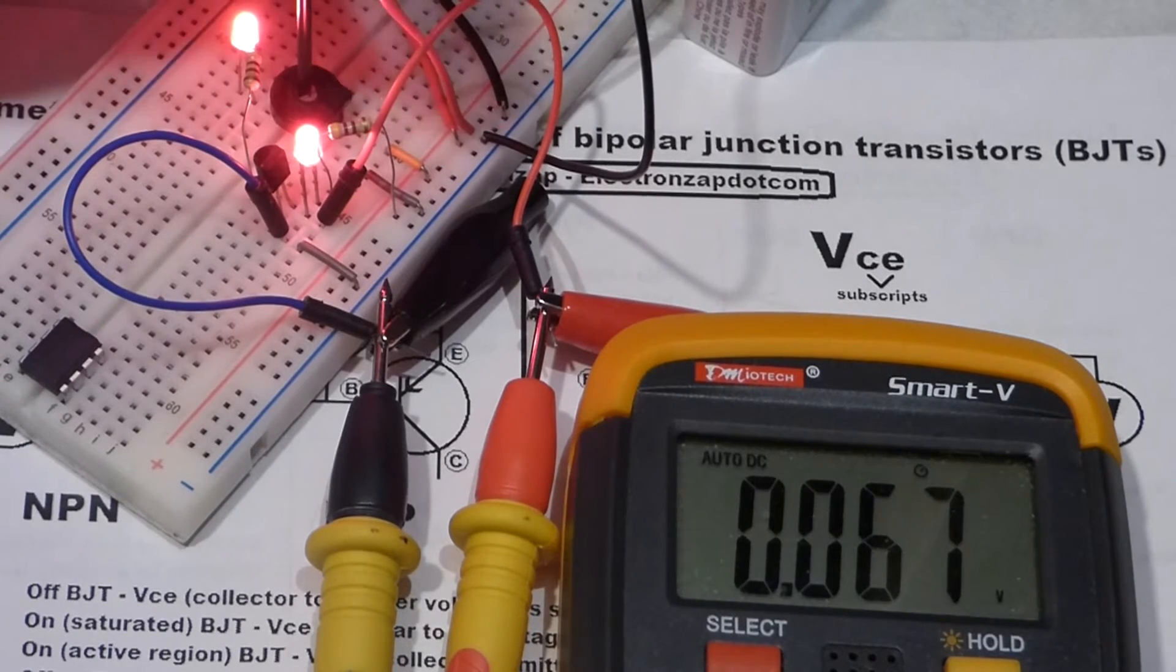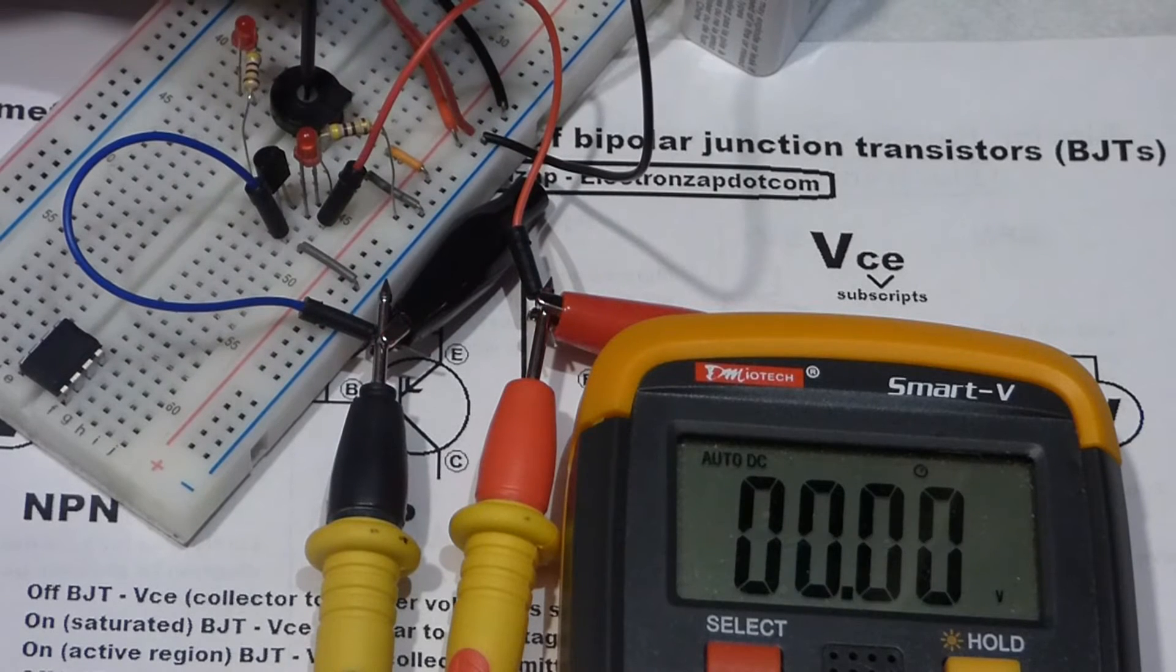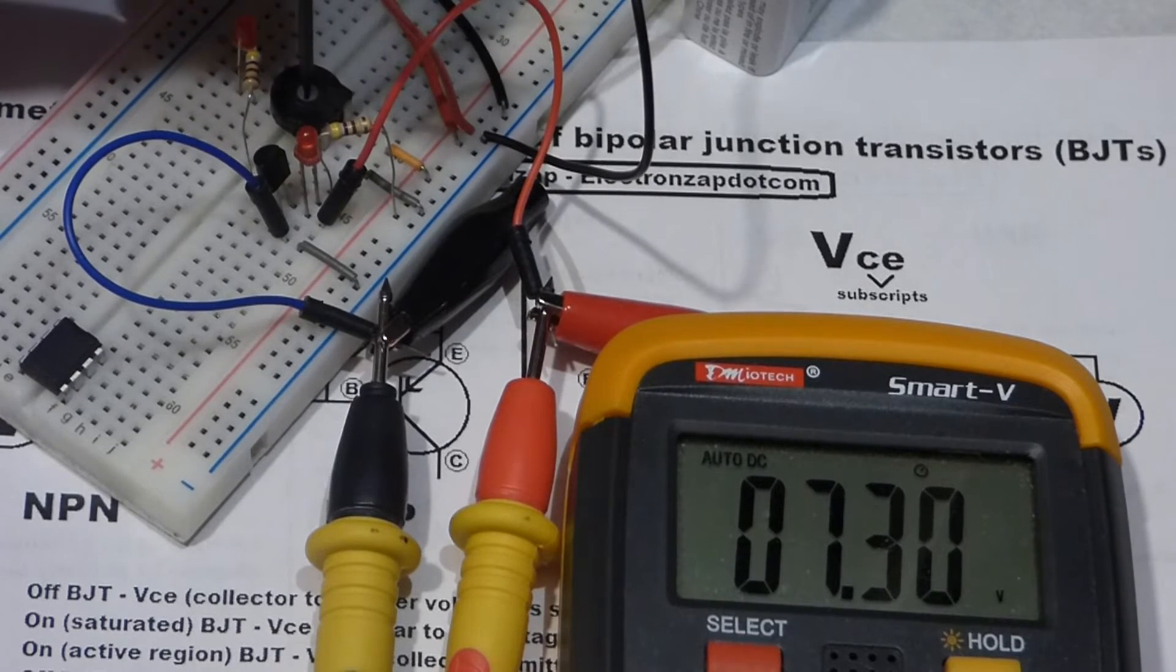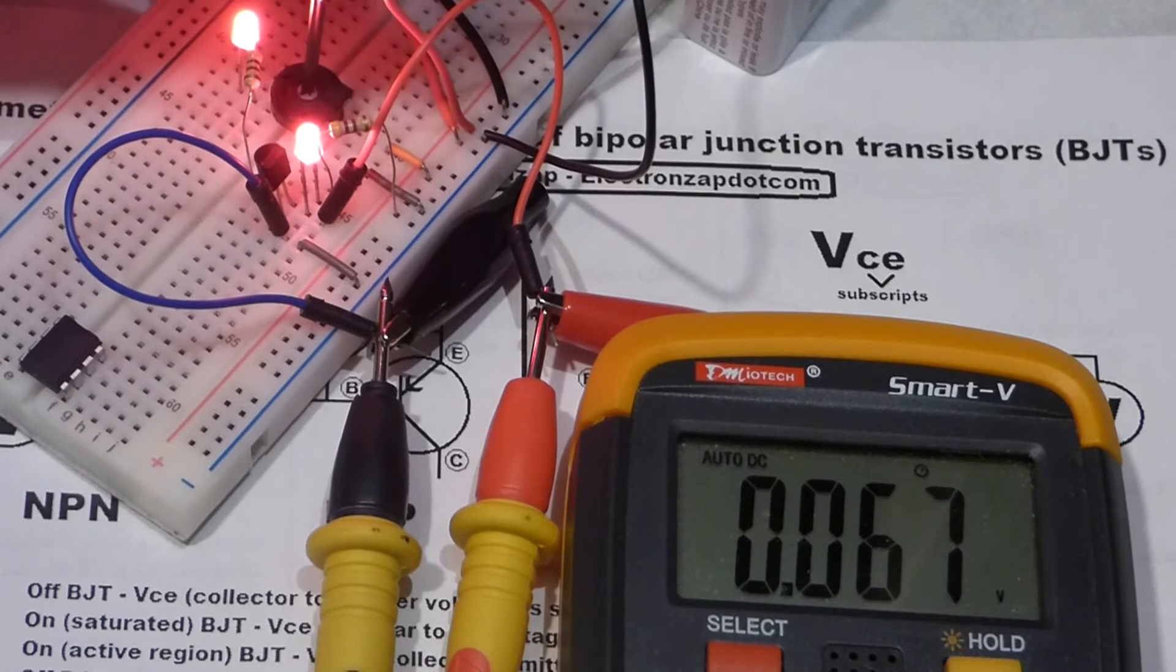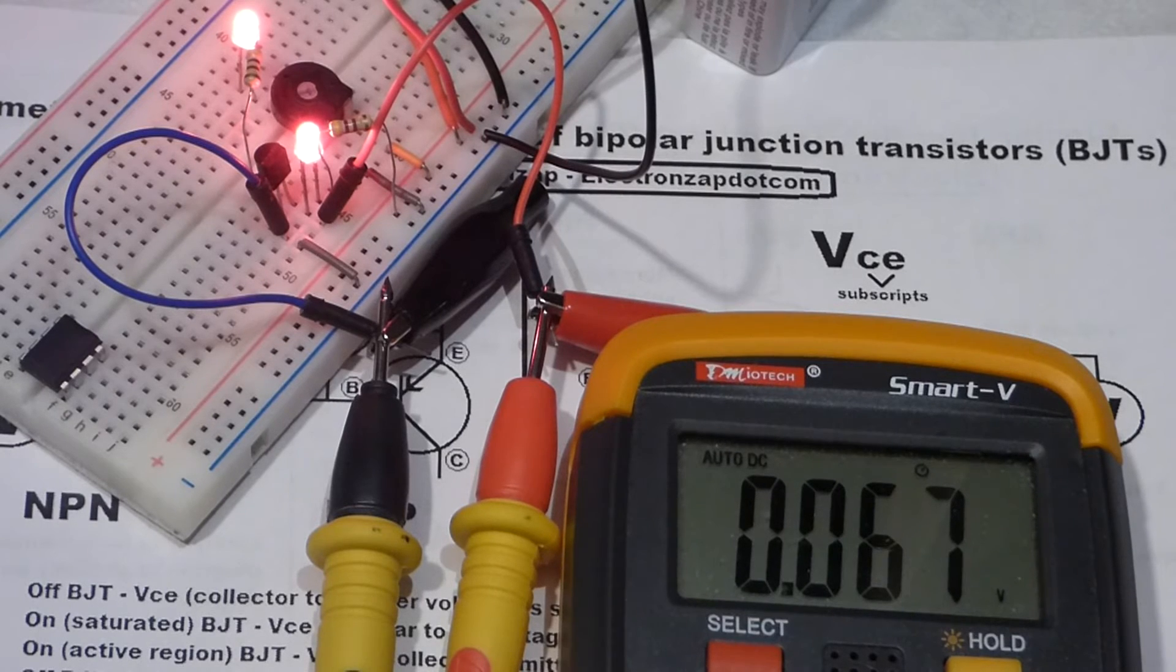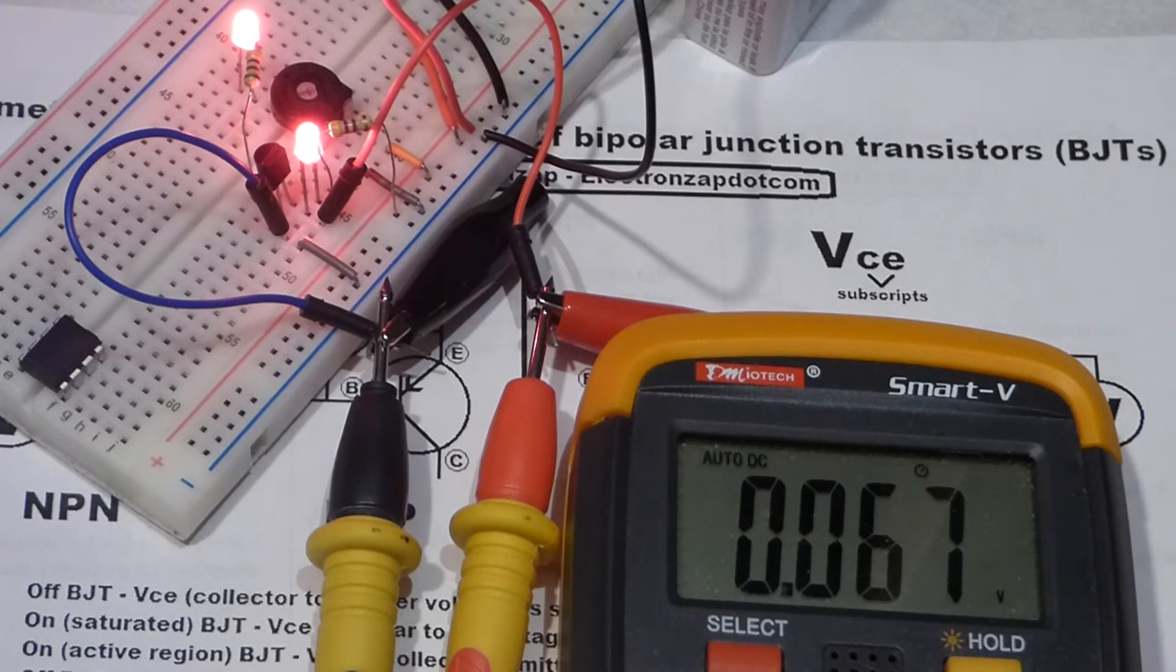When it's almost a perfect insulator, then there's a high voltage across it. Remember, there's the LED drop. But otherwise, this is the battery voltage. Whereas, when you turn it up, the current runs right through it. So it acts like almost a perfect conductor.